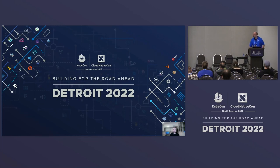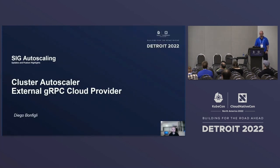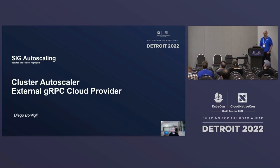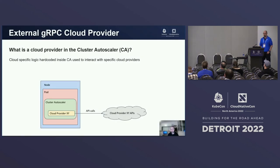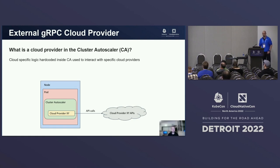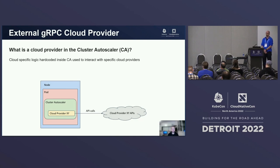Hello, I'm Diego Bonfilgi, SRE at Sysdig. With this presentation I will talk about the new gRPC cloud provider — a plug-in system to implement cloud providers as a separate process from the Cluster Autoscaler. Let me do a small refresher on what a cloud provider is in the context of the Cluster Autoscaler, or CA from now on. The CA adds nodes when pods cannot fit on the current Kubernetes nodes, or removes nodes when resources are underutilized.